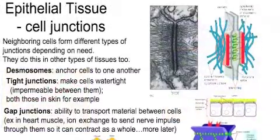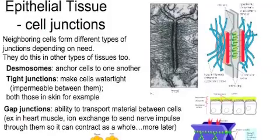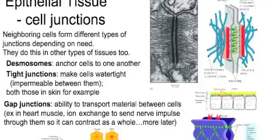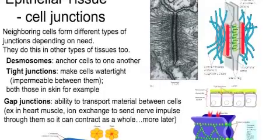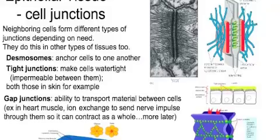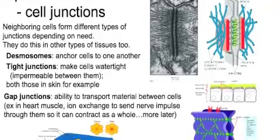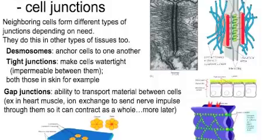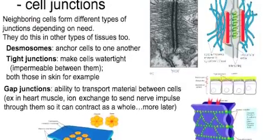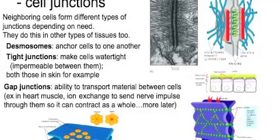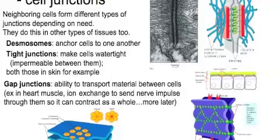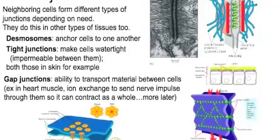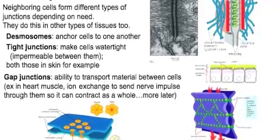Epithelial tissue cells are so tightly packed that they have specialized junctions connecting them. Desmosomes create molecular bonds that anchor cells to one another. Tight junctions form around the cell like a zipper, rendering them impermeable to water — no H₂O between them — making us watertight. The skin is a good example of both. Gap junctions are like pores that give cells the ability to transport material between them. A great example is in the heart muscle, where ions exchange to send nerve impulses throughout the heart so it contracts as a whole unit.